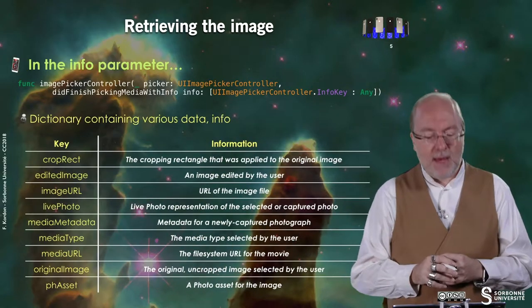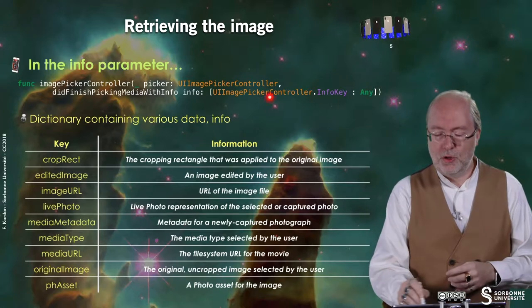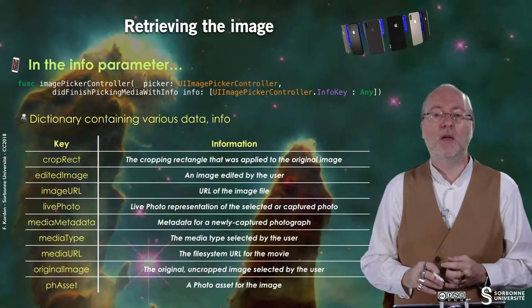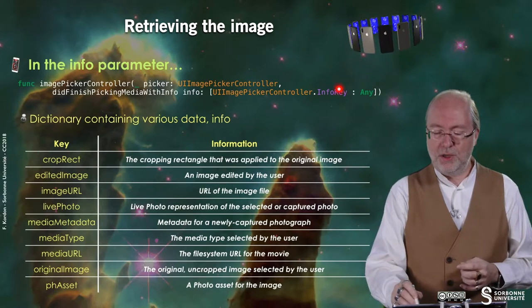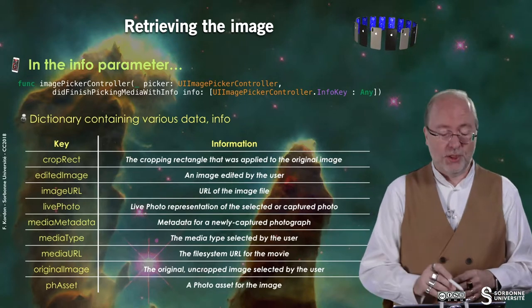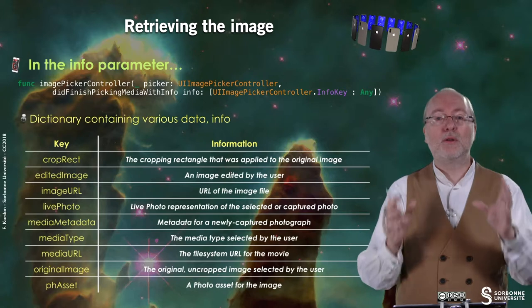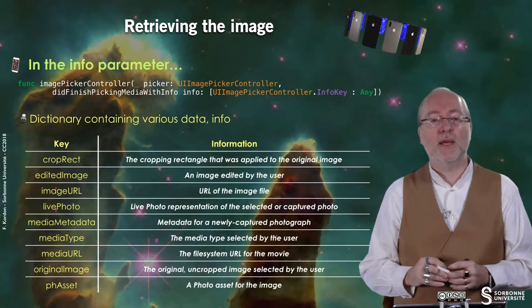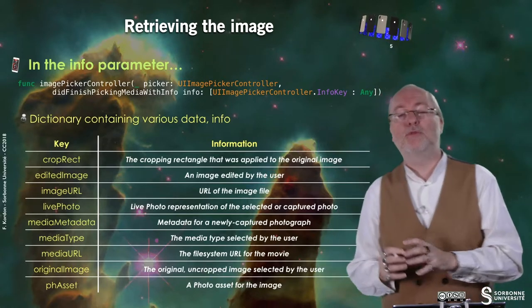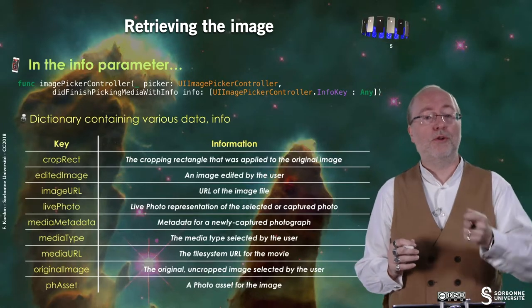To retrieve the image, you go through the info dictionary using info keys. You can get the cropping rectangle applied to the original image, and you can get the image that has been edited by the user — for example, restricted to a smaller zone or with filters applied.